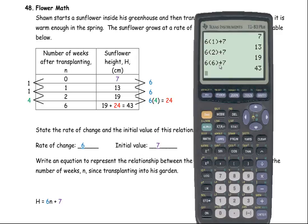So that's the general form for my equation. The rate is multiplied by the number of weeks, and then we add the fixed amount in the end. So the height is 6 times the number of weeks plus 7. That's the equation that we're looking for.